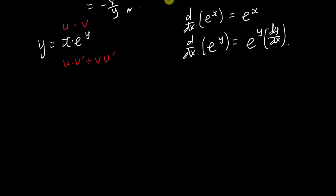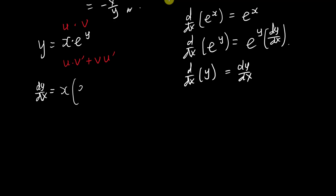Differentiating both sides: on the left, differentiating y gives dy/dx. On the right, applying the product rule — copy x and differentiate e^y gives x·e^y·dy/dx, plus copy e^y and differentiate x gives e^y·1, which is just e^y.